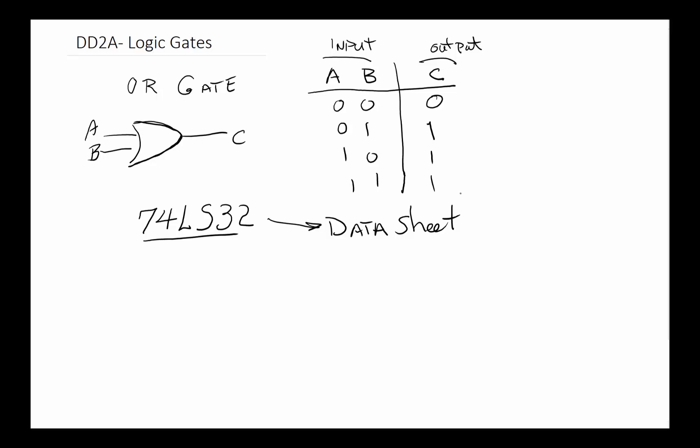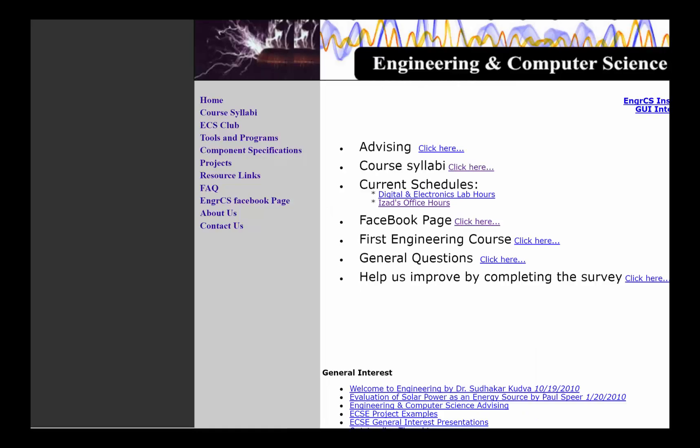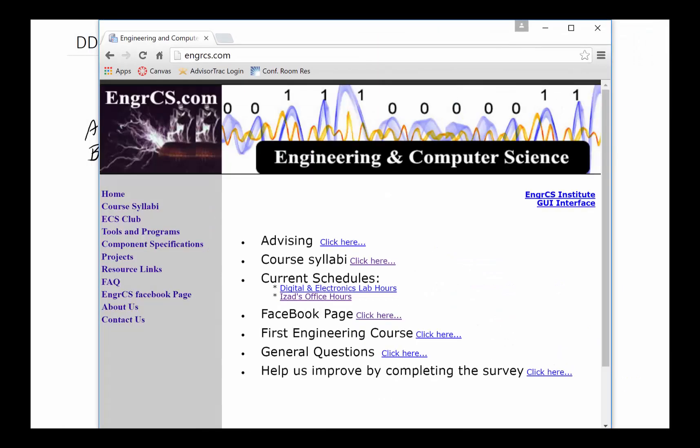We will go through 74LS32 in more detail and I'll show you where these data sheets are located. As we go through the other gates, you can simply go to the same location and get the information you're looking for. You can go to Google to get all the information you want.